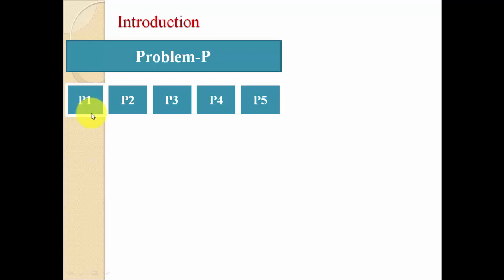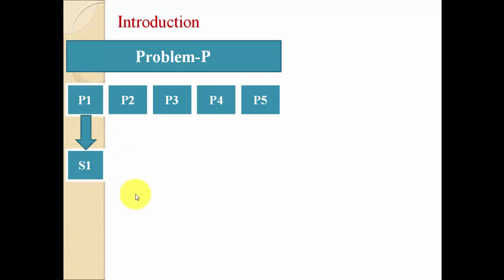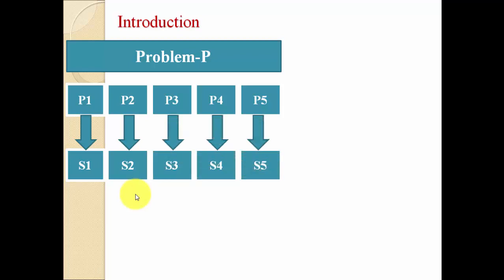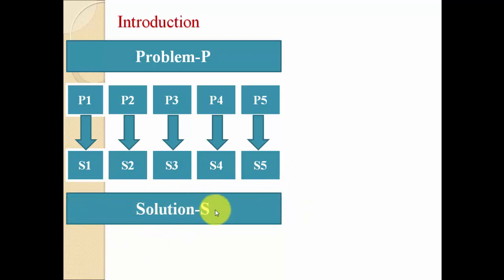We apply the ad hoc algorithm for P1, P2, and P3 to get the solution of every part. For example, applying the ad hoc algorithm gives S1 as the solution of P1, S2 as the solution of P2, and likewise P3 has solution S3, P4 has S4, and P5 has S5. Now we have a solution for each part. The last step is to merge the solutions S1 through S5 into a combined solution — capital S — which is the solution of our main problem P. This concept is known as divide and conquer strategy.